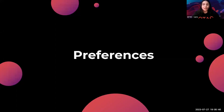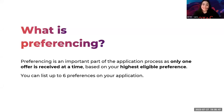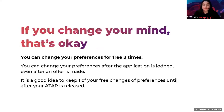Now, preferences. Preferencing is an important part of the application process, as only one offer is received at a time and it's based on your highest eligible preference. You can list up to six preferences on your application. If you change your mind, that's completely fine — you can change your preferences three times free of charge. You can even change your preferences after the application is lodged and even after an offer is made.